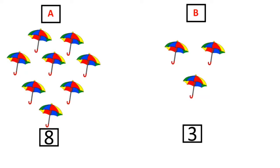Now children, tell me which number is a smaller number between 8 and 3? Two clues: first, when you start counting from 1, the number which comes first between the two numbers. Or if you look at the images you can see lesser values means smaller number. So number 3 is the smaller number.